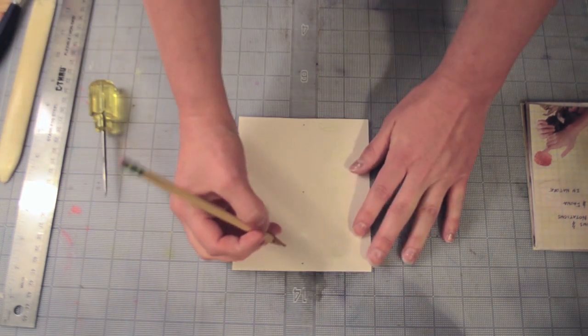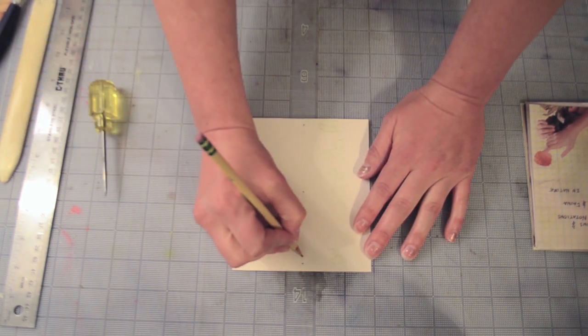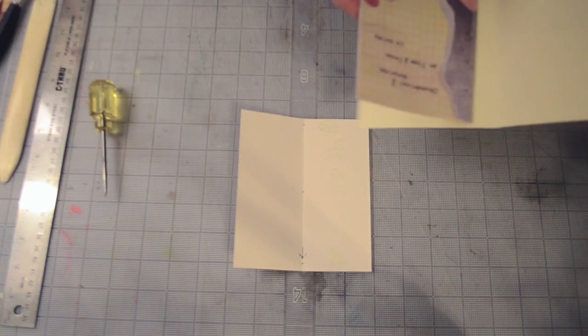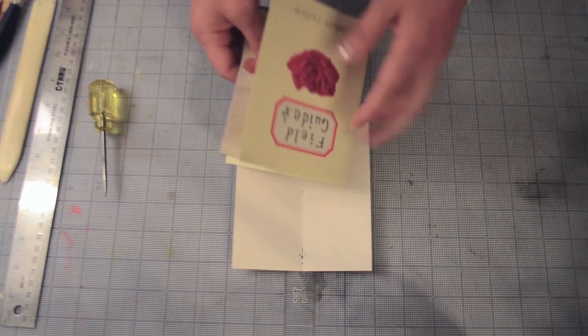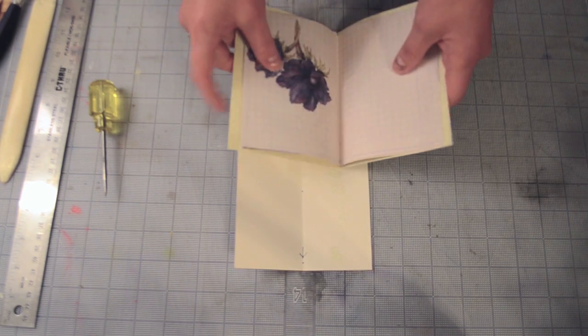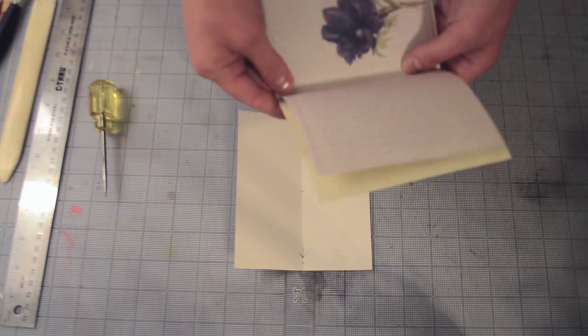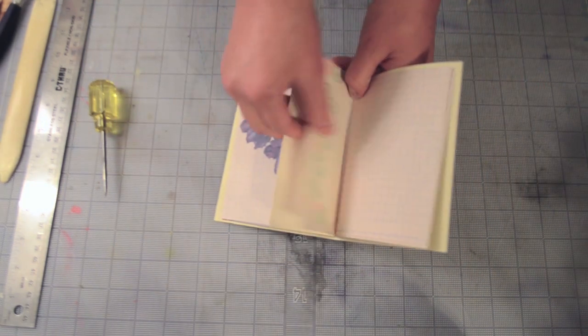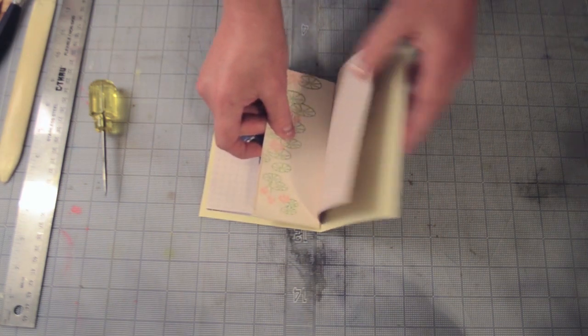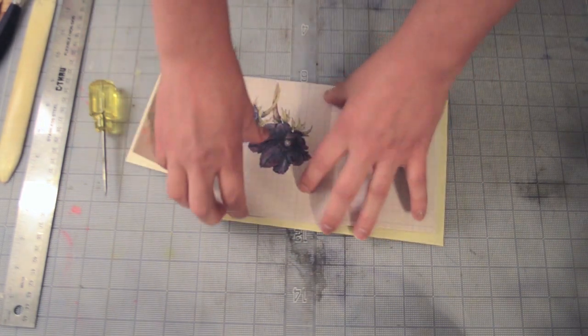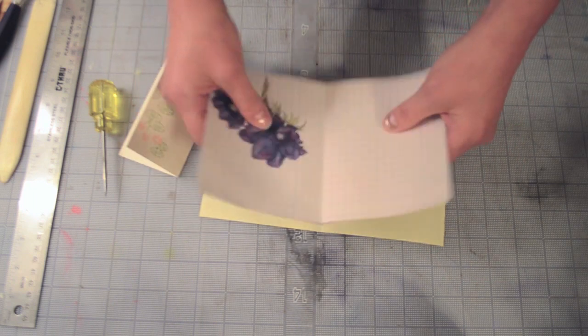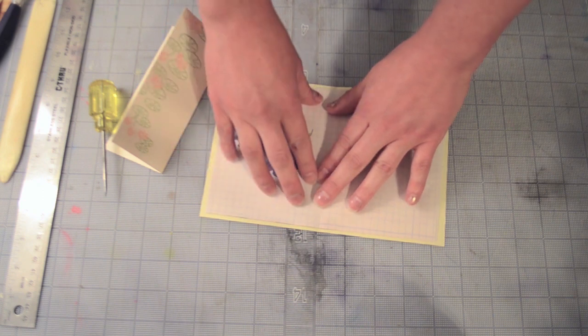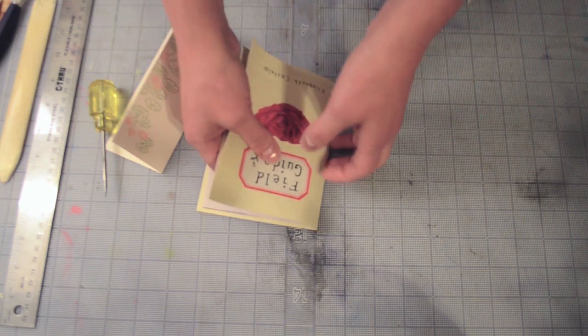And just in case something is a little off, you might want to mark which side is facing up. So now open your book to the center and place your sewing guide inside. And since I trimmed down the little white edge of my printer copy paper, my cover's a little bit bigger than my pages.